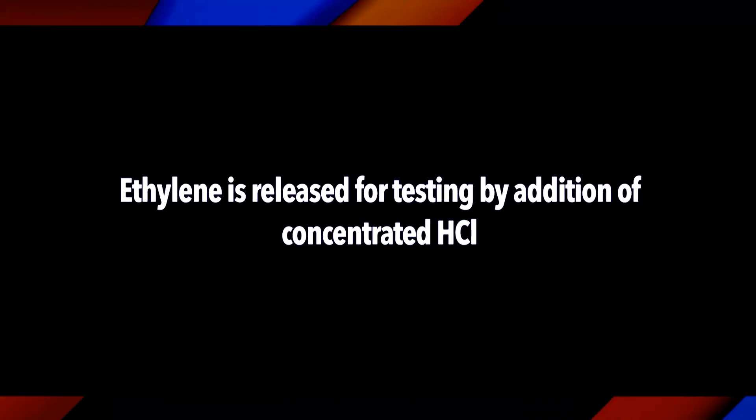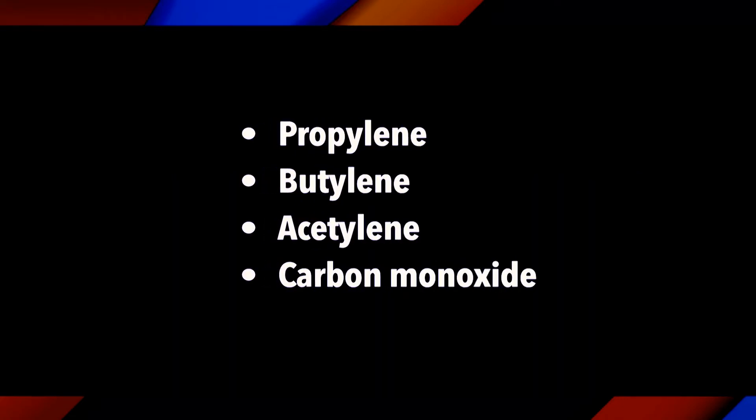These products are not absorbed by the mercury reagent, whereas ethylene is. Hence they can be eliminated and the specificity of the test improved by passing the air containing the plant volatiles through a solution of mercuric nitrite in dilute nitric acid. The ethylene is released from the reagent by the addition of concentrated acid. Since propylene, butylene, acetylene, and carbon monoxide are not absorbed by this reagent, they are not released by it either.